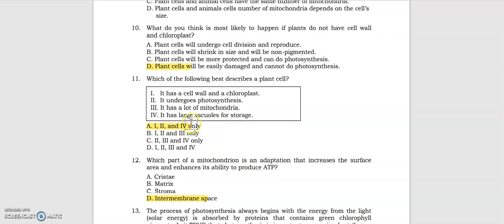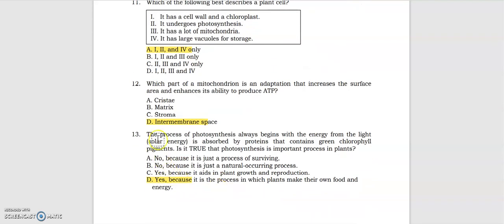Number 11: which of the following best describes a plant cell? The answer is one, two and four: it has a cell wall, chloroplast, it undergoes photosynthesis, and it has large vacuoles for storage. Number 12: which part of a mitochondrion is an adaptation that increases the surface area and enhances its ability to produce ATP? Letter D, inner membrane space. Number 13: the process of photosynthesis always begins with the energy from the light or solar energy is absorbed by the proteins that contains green chlorophyll pigments. Is it true that photosynthesis is important process in plants? The answer is letter D, yes, because it is the process in which plants make their own food and energy.